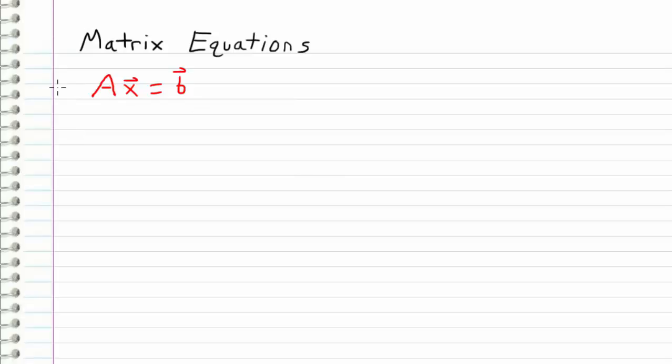So really all that a matrix equation is, is an algebraic expression that involves matrices and vectors. And typically we see matrix equations of this form right here, where we have a matrix A multiplied by a vector x, and this is equal to another vector. So I could write this out explicitly. If we have an m by n matrix, then we could write it out like this, where it has m rows. So this would be A m1, and all the way down to the nth column.